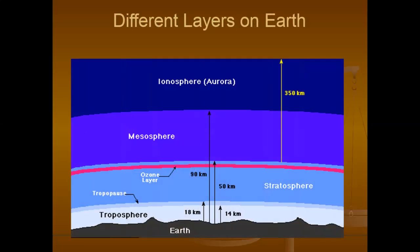Different layers on Earth: ionosphere layer, mesosphere, ozone layer, troposphere, stratosphere, troposphere, and Earth. From the Earth's surface, according to the altitude, these layers are split into different names. This will be seen later.